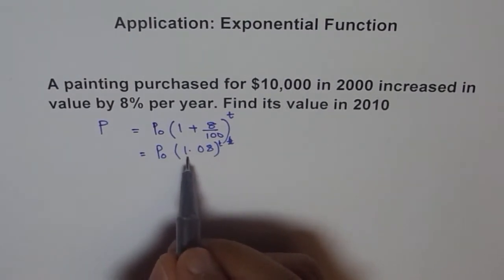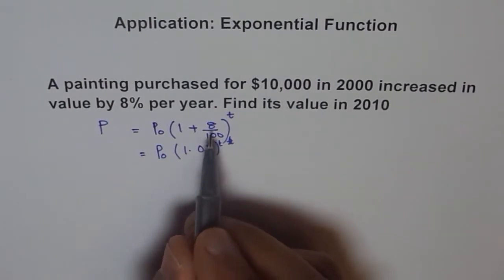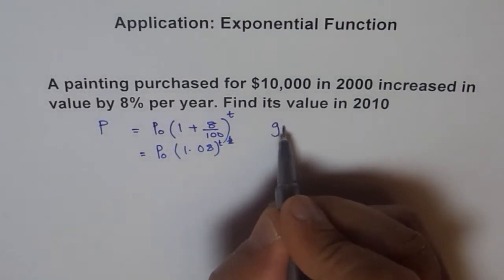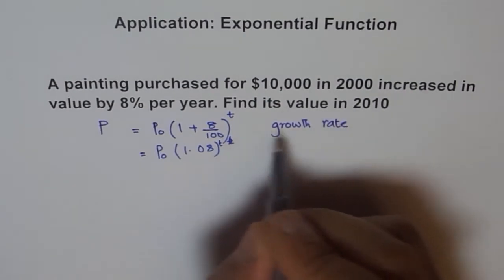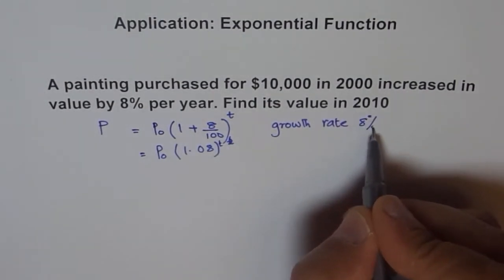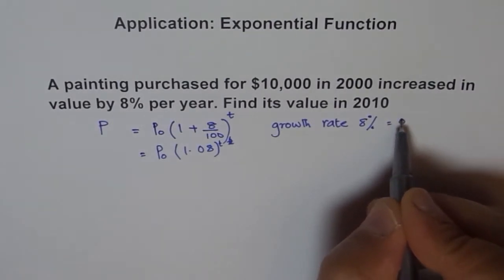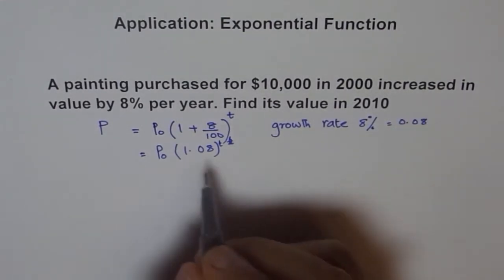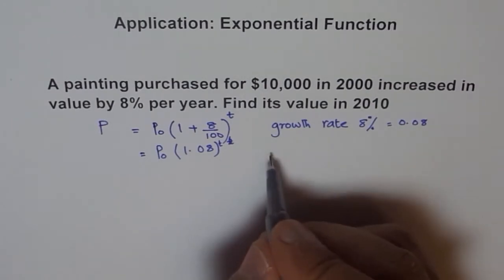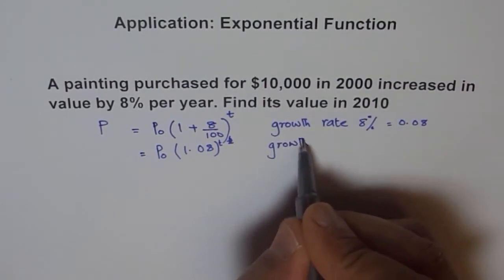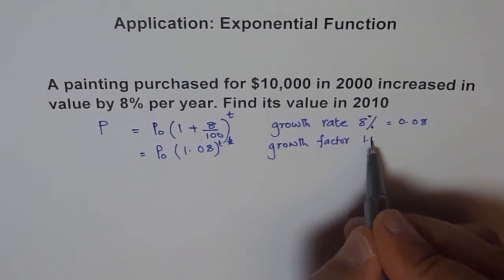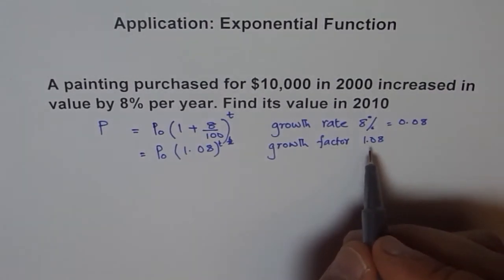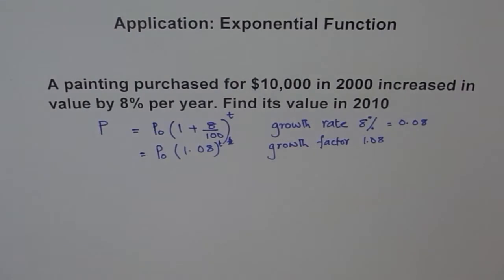Now this is your growth factor. Here two things. One I should tell you what is growth rate. Growth rate is 8%, which is equal to 0.08. And the term by which you multiply it is called growth factor. Growth factor is 1.08. It means every year your price increases, becomes 1.08 times. Factor means number by which you multiply.